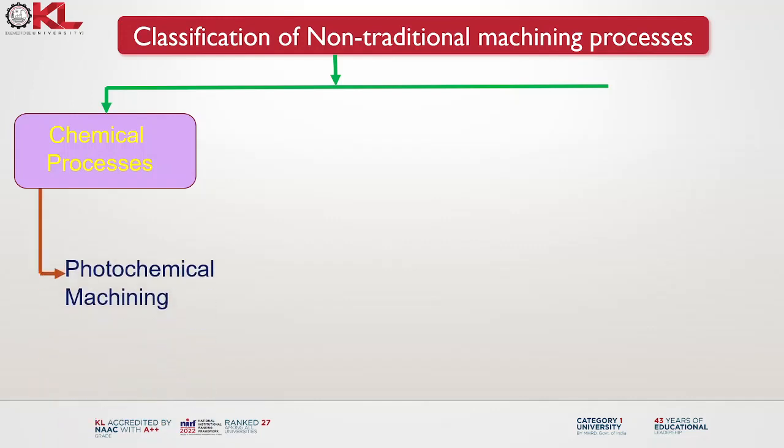The sub-classifications include photochemical machining. Photochemical machining, also known as photochemical etching or chemical milling, is a precise and versatile manufacturing process used to fabricate thin metal parts with intricate shapes and high accuracy. It involves the selective removal of metal from sheet or plate using a combination of photochemical and chemical reactions.